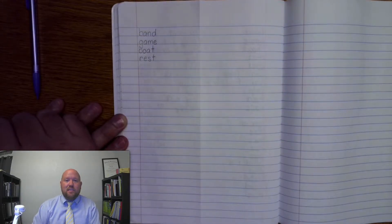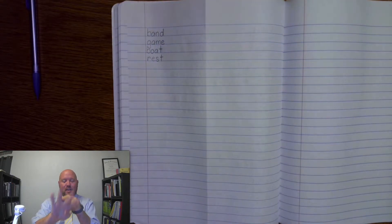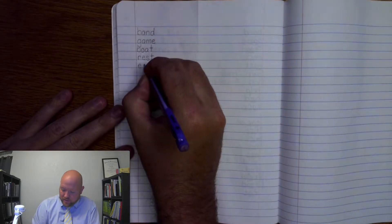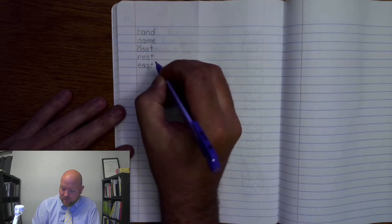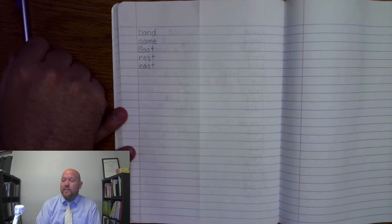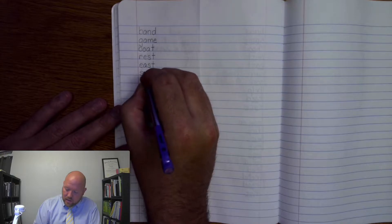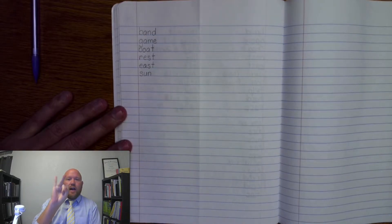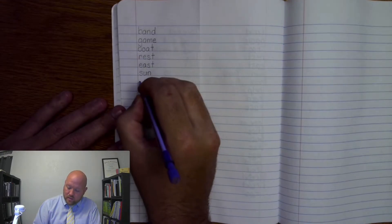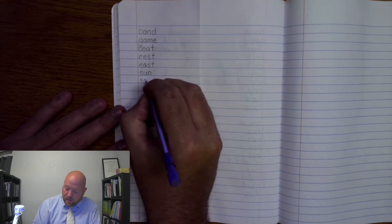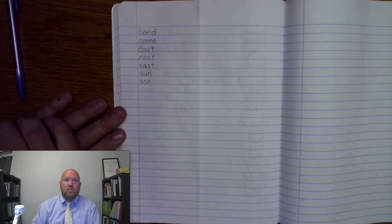Next word is east. E-A-S-T. East. Go ahead and write it. E-A-S-T. East. Next word is sun, like in the sky. Sun. S-U-N. Sun. S-U-N. Sun. Next word is son, like he is my son. S-O-N. Son. S-O-N. Son.